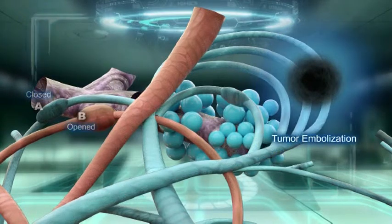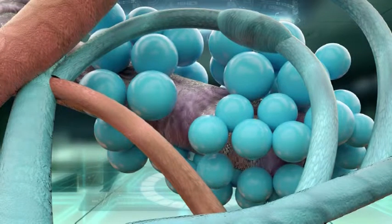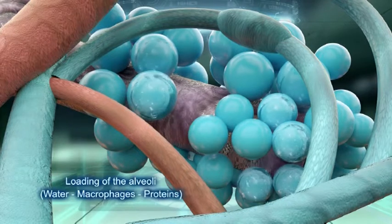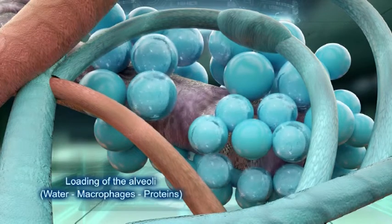The prevention of the pulmonary blood flow leads to a sudden opening of the bronchial shunts, which causes the loading of the alveoli with transudate fluid, edema, proteins and macrophagic cells.